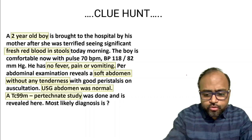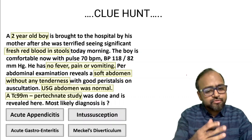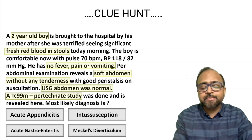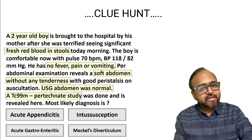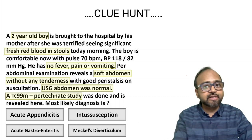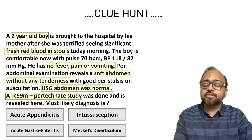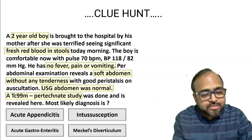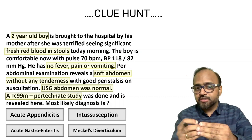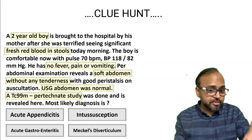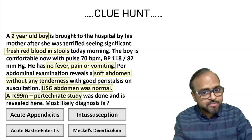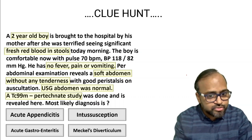Each diagnosis is associated with certain clinical findings. Acute appendicitis will typically present with severe pain in the right iliac fossa with tenderness at McBurney's point — not seen here. Intussusception can present with blood in stools — red currant jelly stools — and is also common in the pediatric age group. But with intussusception, the child usually presents with severe episodic cramping pain. Here, there was no pain, no vomiting, the abdomen is soft, nothing palpable, no tenderness.